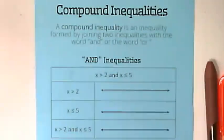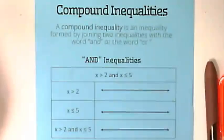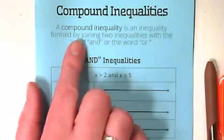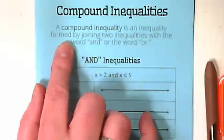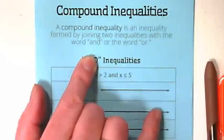So we're starting today with a definition of a compound inequality. As I said last Friday, when we were first starting to work with compound inequalities, they are very much like a compound word. A compound word has two words that come together to make a word—I think the example I used last week was butterfly. In this case, a compound inequality is an inequality formed by joining two inequalities with the word 'and' or the word 'or'.